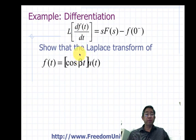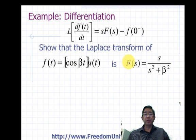We'll show that the Laplace transform of cosine beta t multiplied by the step function, so that this function is causal since we're going to integrate from zero to infinity by definition, and show that its Laplace transform F of s is equal to s divided by s squared plus beta squared.